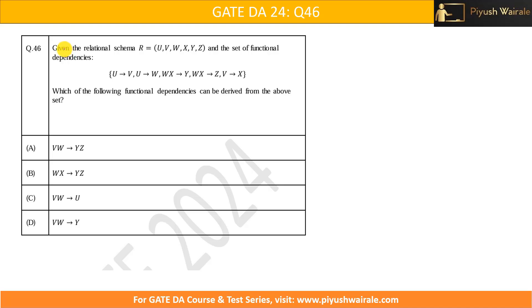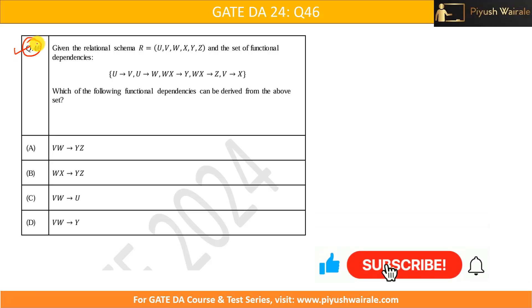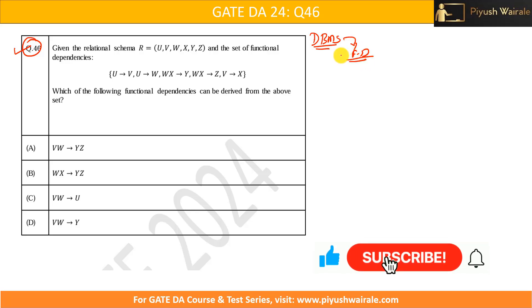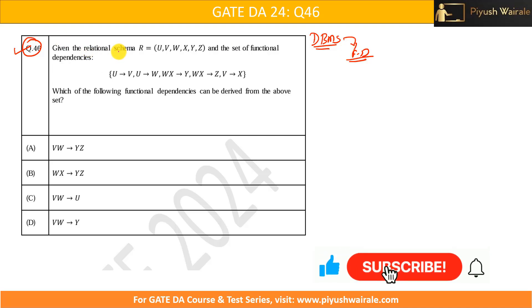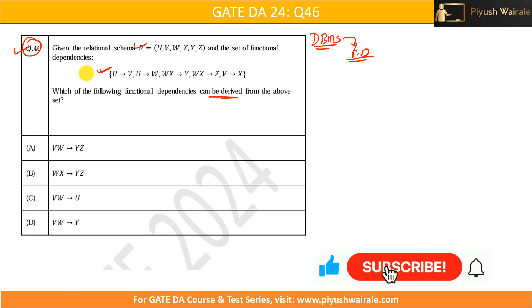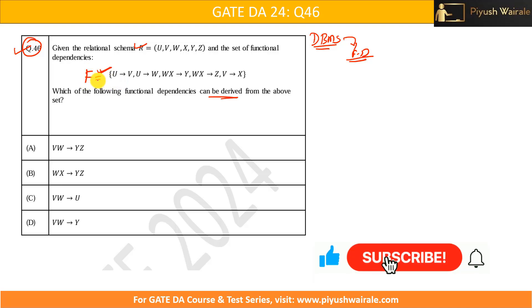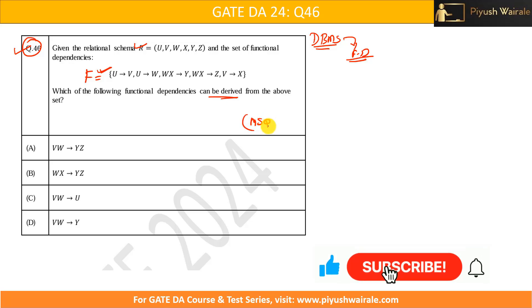In this video we are going to discuss question number 46 from GATE DA 2024 exam. This question is based on the DBMS subject and the functional dependency concept. The question gives us a relation schema R and a set of functional dependencies, and we need to find out which of the following functional dependencies can be derived from that set. This is an MSQ question, so multiple options can be correct.